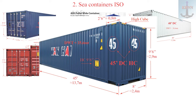45-foot DC and HC containers: as a rule, a 45-foot container is made in high cube version. Its capacity is four cubic meters more than the standard one, therefore it is used for storage and transportation of bulky dry cargo. It is five feet longer than the standard 40.